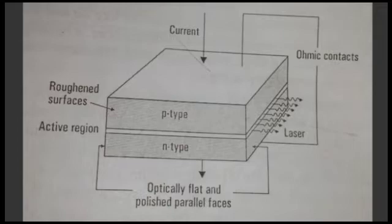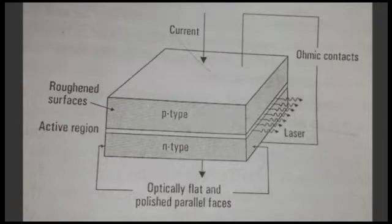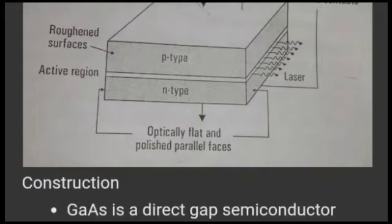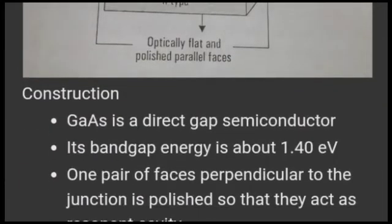This is the rough end surface, and the other planes are polished and in place. These are the key points of the construction of the semiconductor laser.